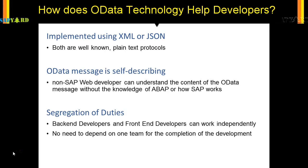The third advantage is segregation of duties, which you may not find mentioned in many other places. The back-end developer — typically the ABAPer who works in SAP — and the front-end developer who is non-SAP can work independently. In a project where you need to develop an app, the ABAP developer creates the OData service in the back-end, while a separate UI developer handles the front-end. Both can work simultaneously and independently and still deliver the project on time, with no need for one team to wait on the other.